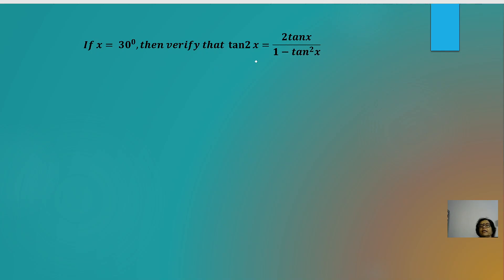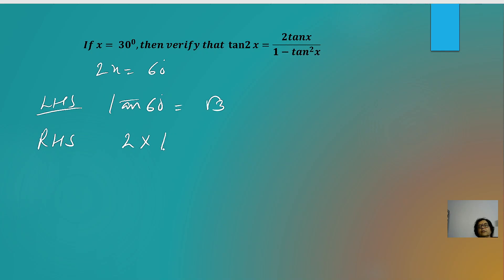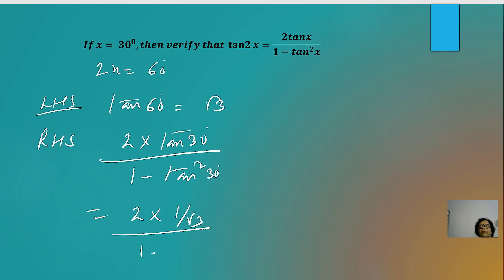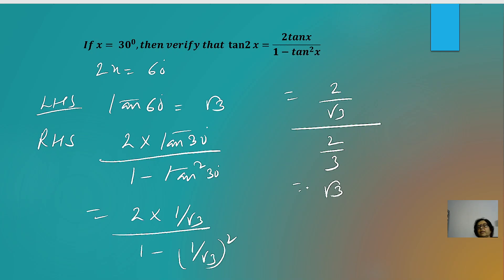Next: if x = 30°, verify that tan 2x = 2tan x/(1 − tan²x). LHS: tan 60° = √3. RHS: 2·tan 30°/(1 − tan²30°) = 2·(1/√3)/(1 − 1/3) = (2/√3)/(2/3) = √3. LHS = RHS = √3, verified. These were various applications of trigonometric ratios; practice more such questions to become thorough.